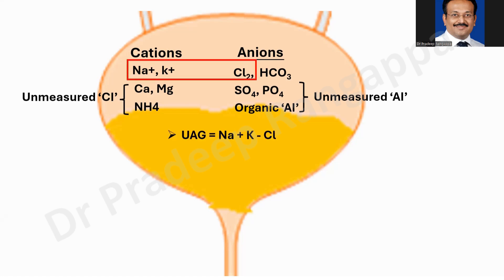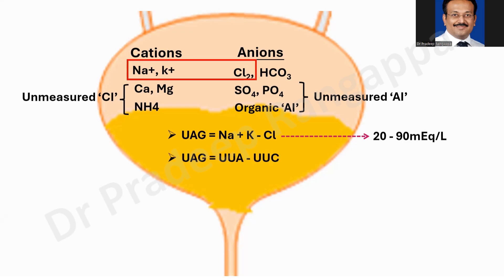The urine anion gap formula is sodium plus potassium minus chloride — you don't take bicarbonate. Like serum anion gap, urine anion gap can also be expressed as unmeasured anions minus unmeasured cations. The normal urine anion gap is controversial — it can be zero to 20, but normally a positive urine anion gap up to 70 mEq/L can be considered normal. Beyond 70, there is imbalance between measured and unmeasured cations and anions.